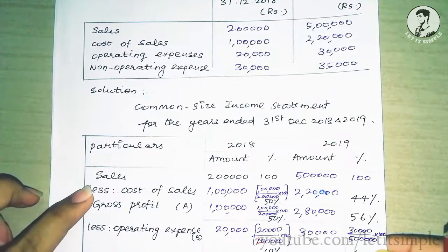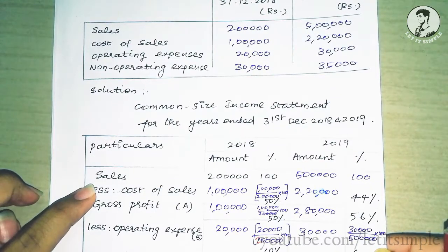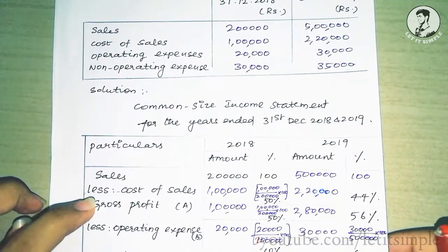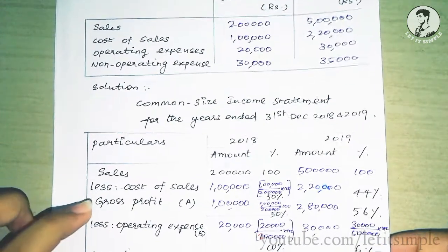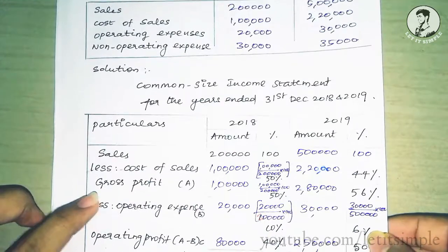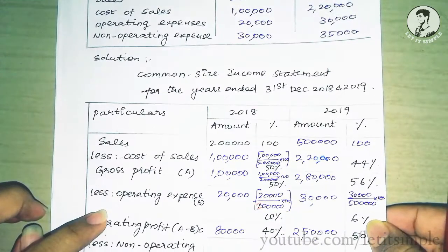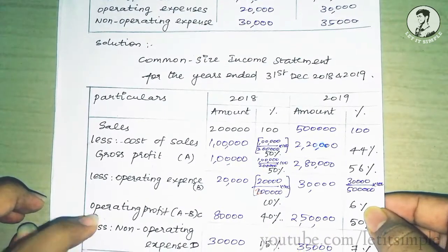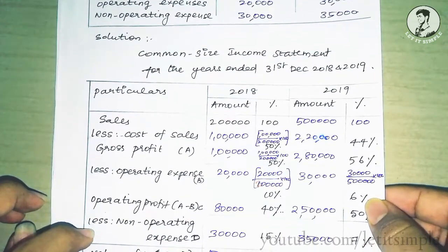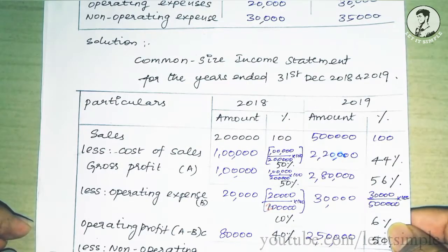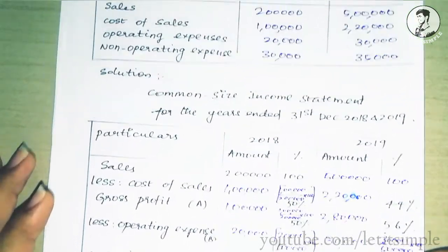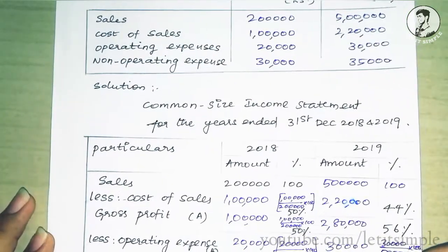We know the format for computing the income statement and balance sheet. First, we will copy the format. Sales minus cost of sales gives gross profit. If we deduct the gross profit by operating expenses, we get operating profit. If we add non-operating income and deduct non-operating expenses, we get net profit. This is the format.